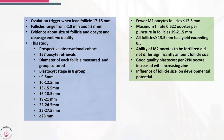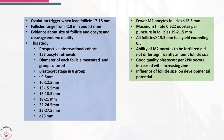The diameter of each follicle was measured, group cultured, and checked at blastocyst stage. There were eight groups: follicles less than 9.5 millimeters, 10 to 12 millimeters, 13 to 15.5 millimeters, 16 to 18.5 millimeters, 19 to 21 millimeters, 22 to 24 millimeters, and so on.